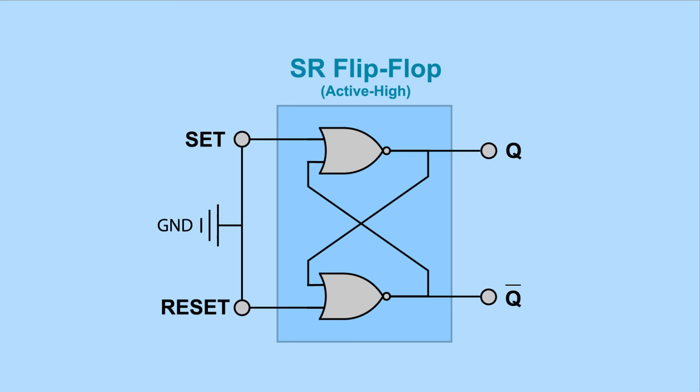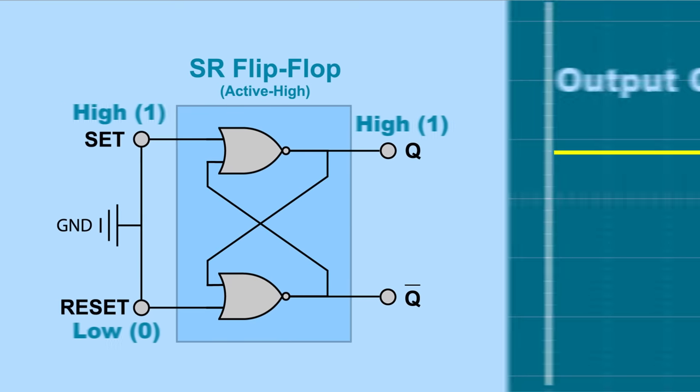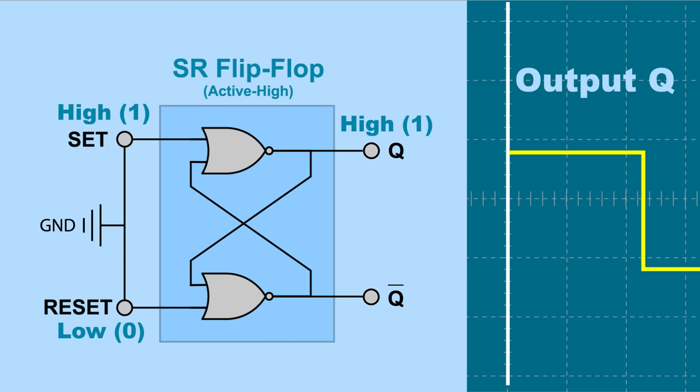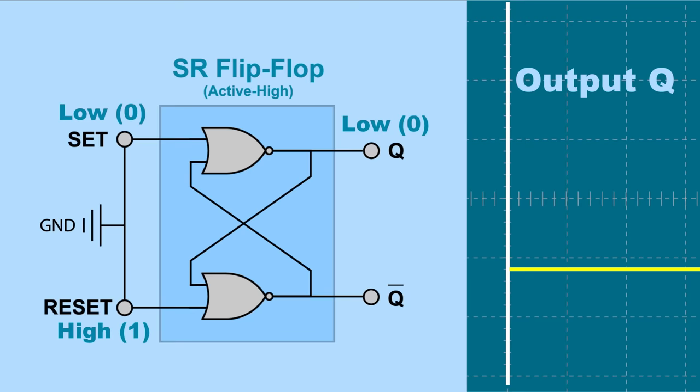This SR flip-flop made of NOR gates is active high. Remember that the output of a NOR gate is high only if both inputs are low, otherwise the output is low. One input of each NOR gate is connected to set or reset. Notice how the second input of each gate is connected to the output of the other gate. This strange connection is essential to the function of a flip-flop. Since this SR latch is active high, the inputs are connected to ground, normally low. When the set input is active and goes high, it sets the latch and output Q goes high. If the set input goes low, output Q doesn't change. It stays high. It is latched.